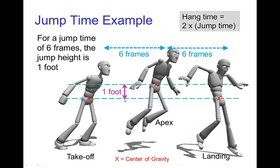If we have a character that jumps to a height of 1 foot, then we know it takes 6 frames to fall from a height of 1 foot and it takes 6 frames to rise up to a height of 1 foot. So the time in the air is very easy to find from that table. The total time in the air would be 6 frames of jump time going up and then 6 frames of jump time coming down. So the total hang time would be 12 frames for a jump that has a height of 1 foot.